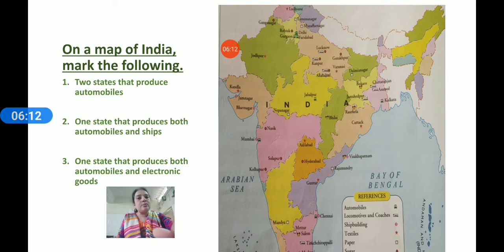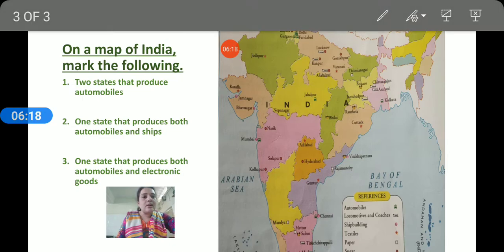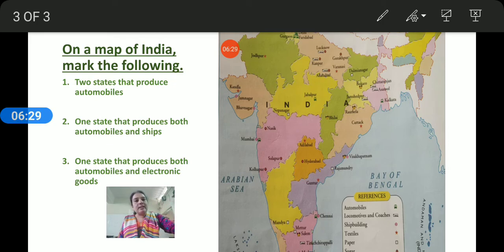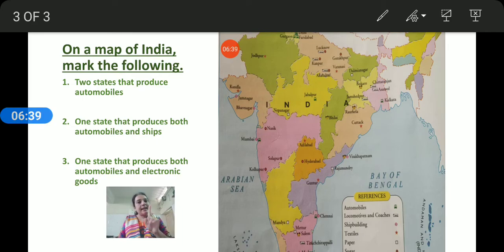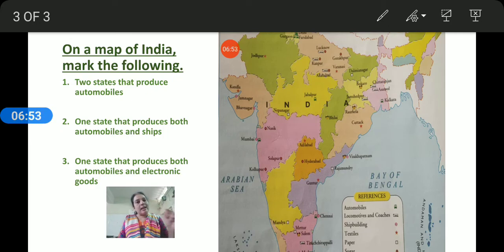Third, mark one state that produces both automobiles and electronic goods. You also have to mark one state for automobiles and aircraft. Take the same type of line into one state for each. I hope you will be able to complete both of these political maps. Since every symbol is different, it will be clear. Write the name of each symbol — coal, gold, automobiles, automobiles and shipping, automobiles and electronic goods — all of these symbols on your maps.